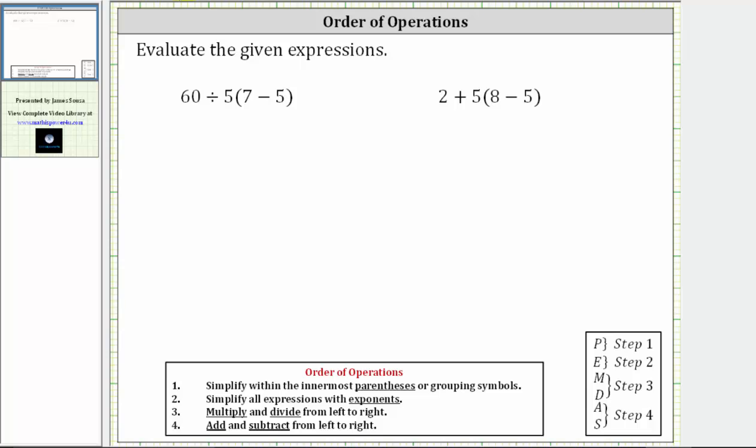Looking at the first expression, this means we determine the difference inside the parentheses first. Seven minus five is equal to two. Therefore, the expression simplifies to 60 divided by five times two.